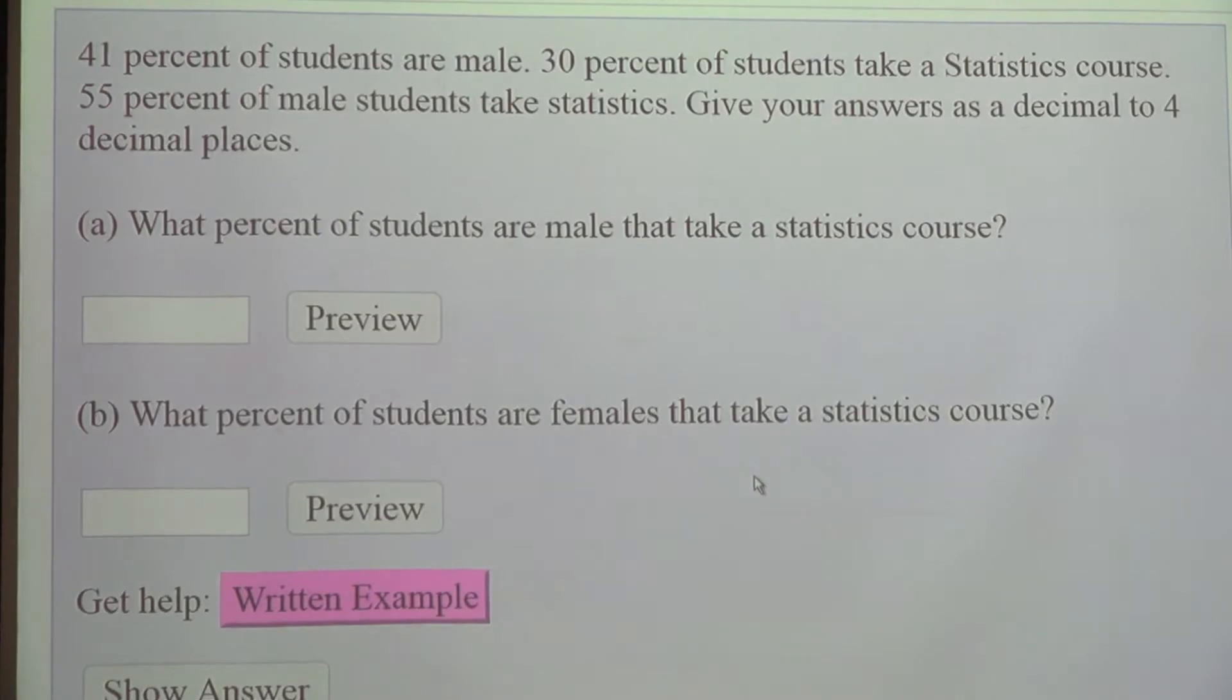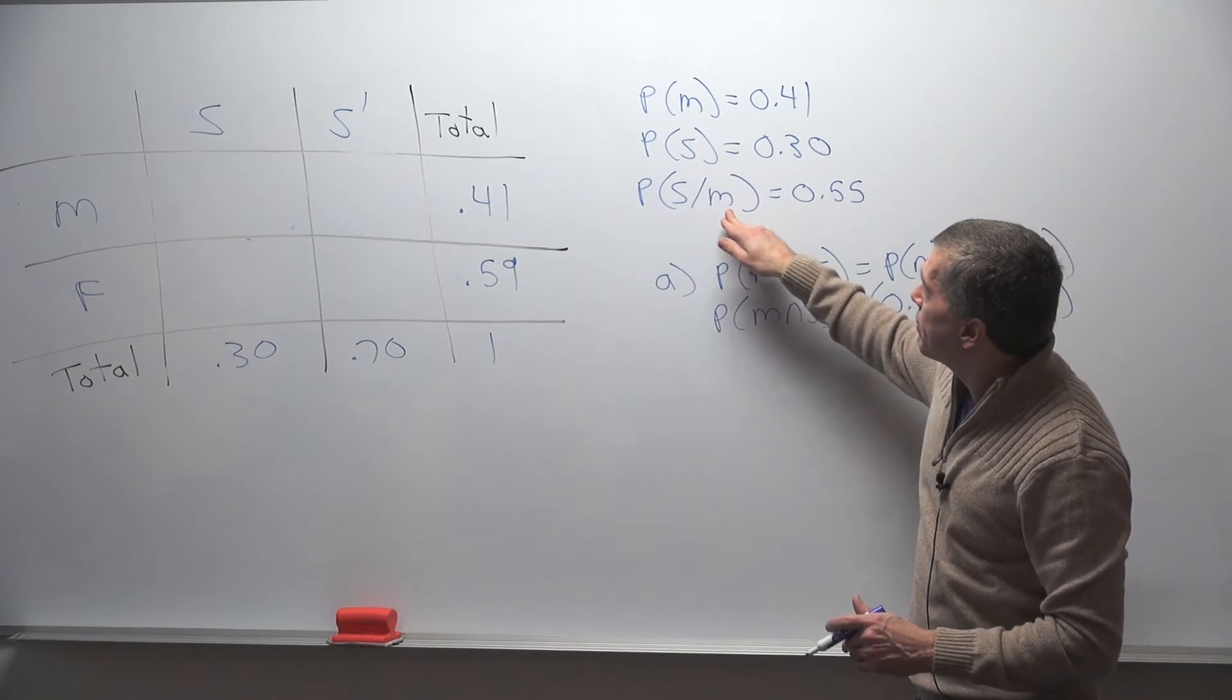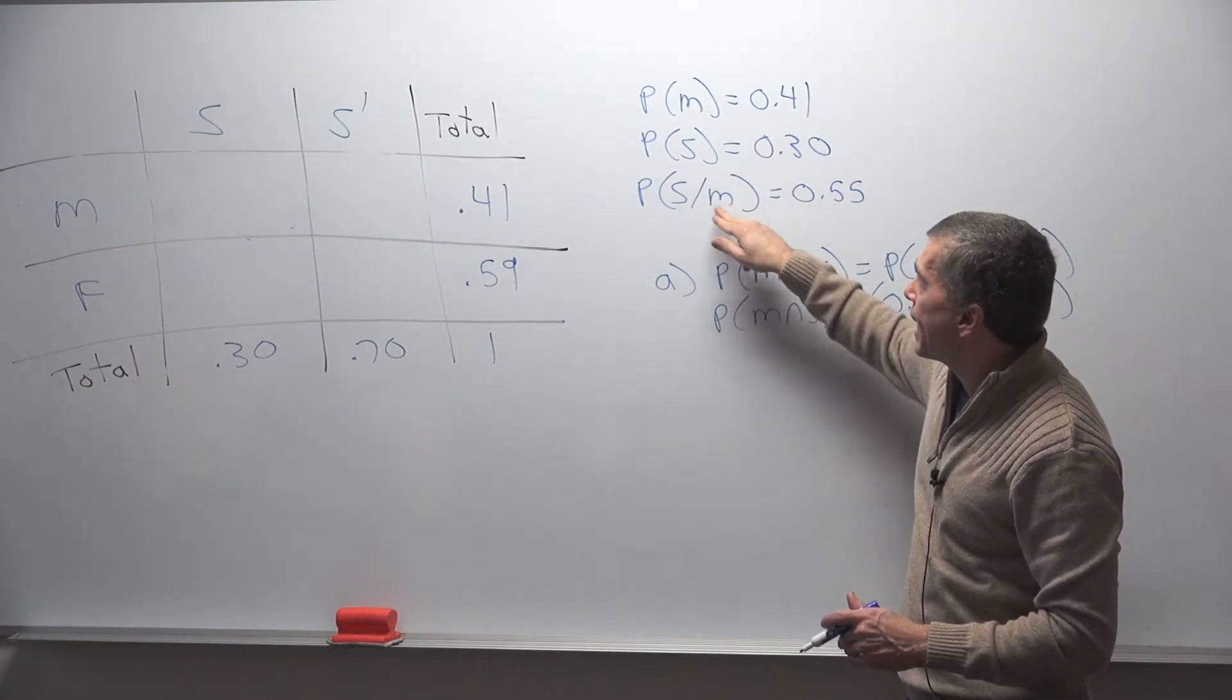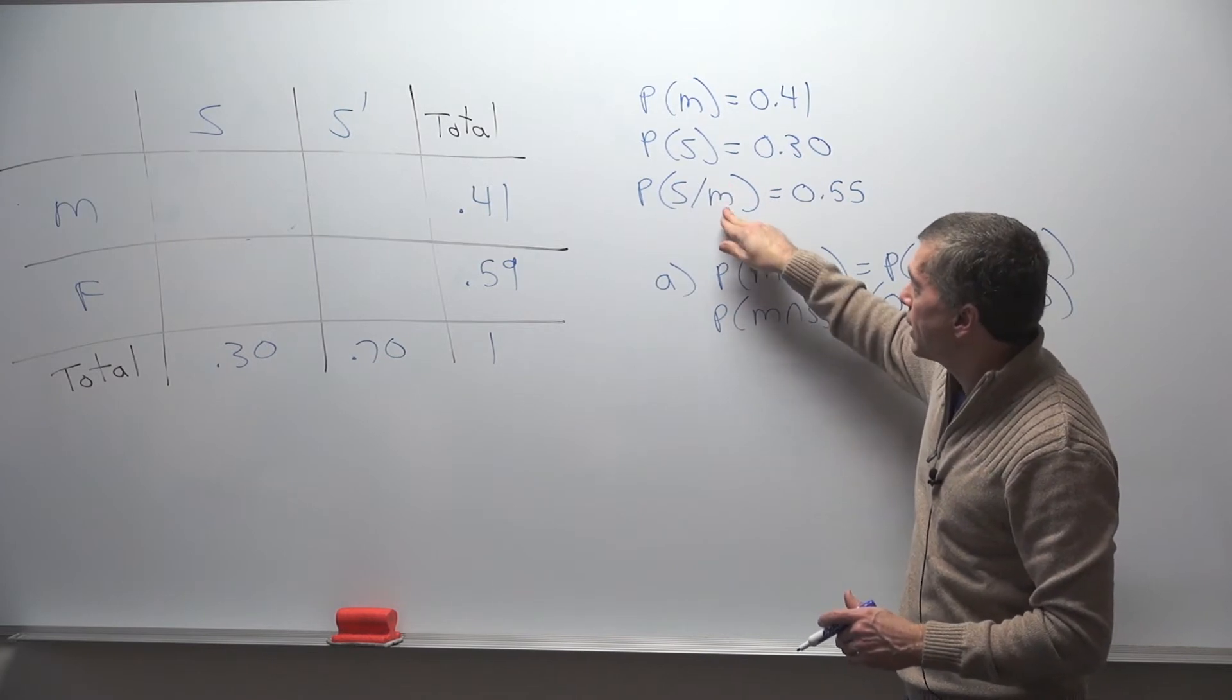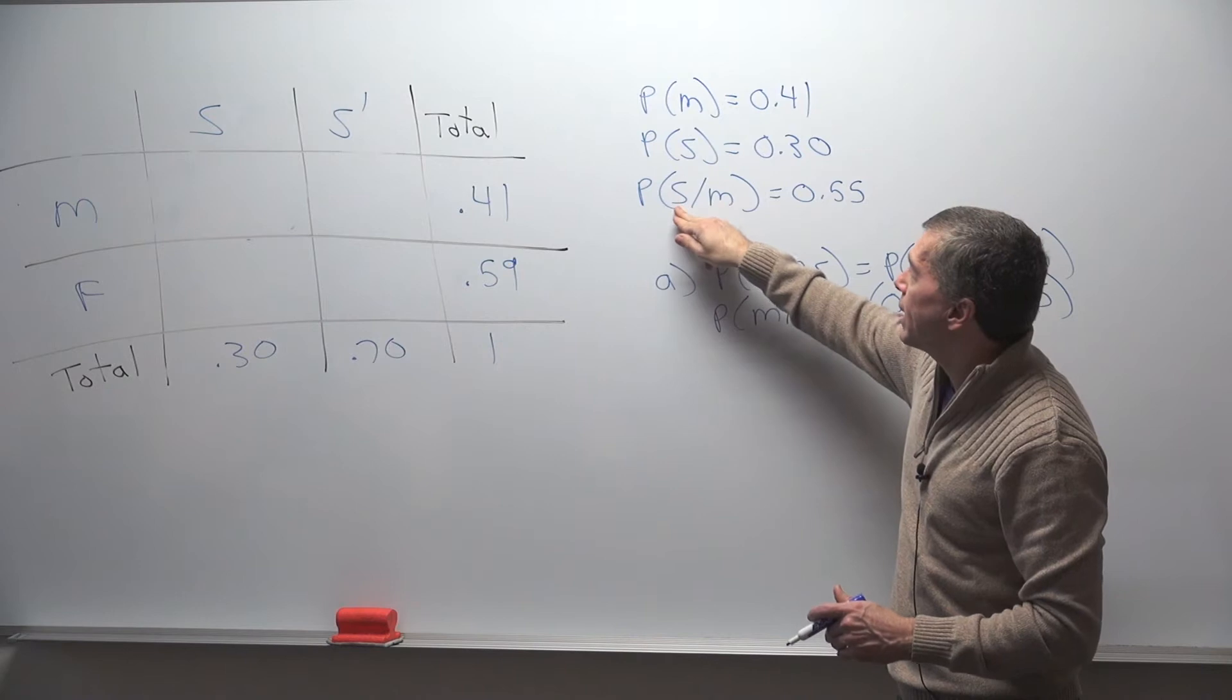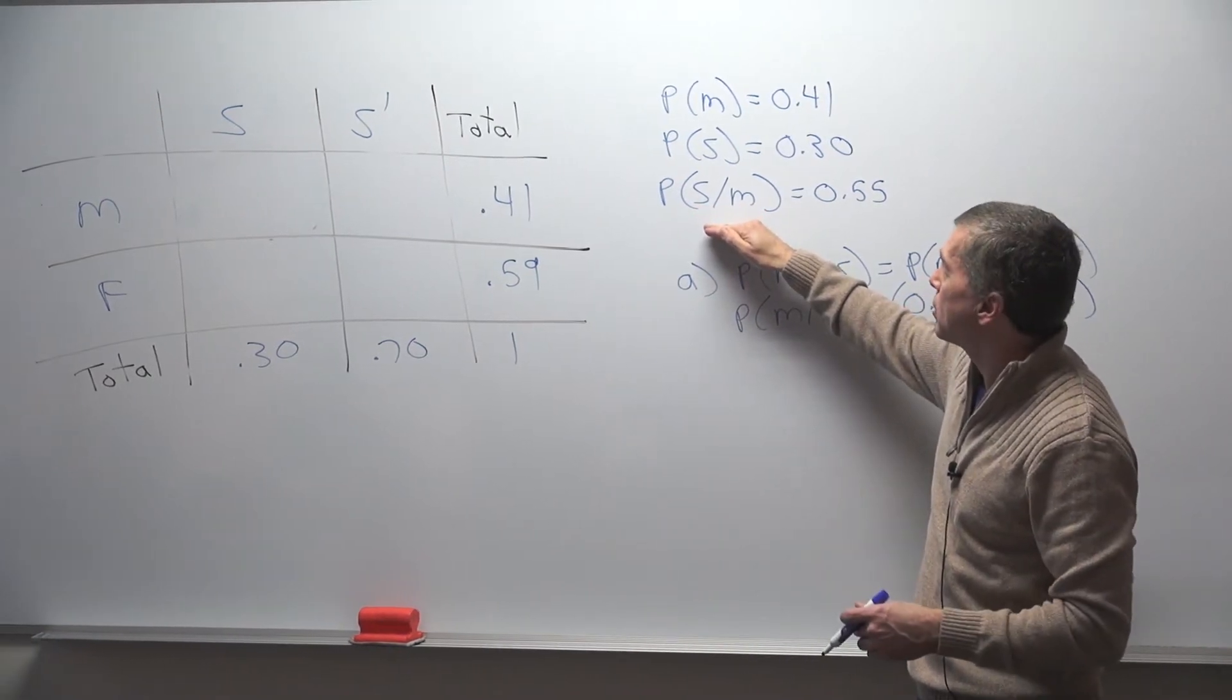And then the tough sentence here is 55% of male students take statistics. So 55% of the male, given male. See, the word after the 'of' is what it's out of, it's after the given, out of these 55% of the male students take statistics. So you got to get used to doing this and writing this correctly so that you can answer the harder problems.